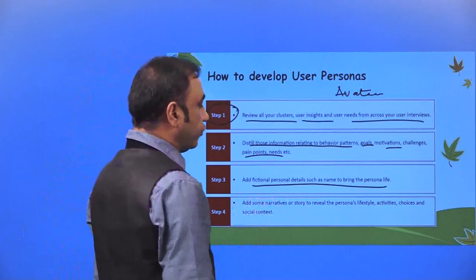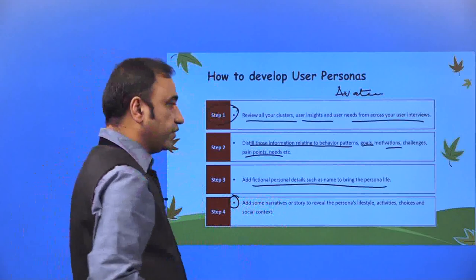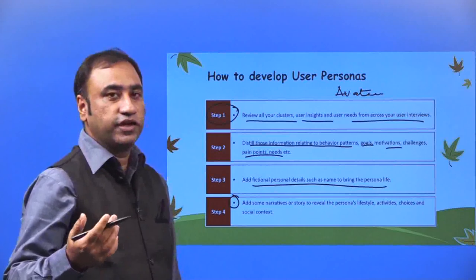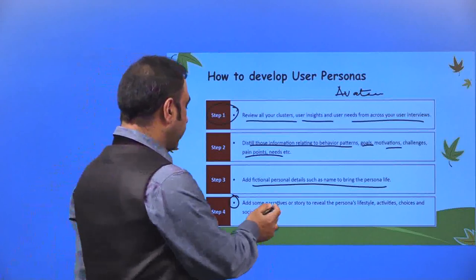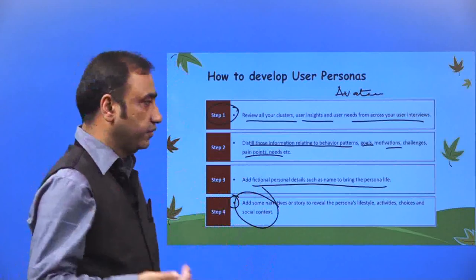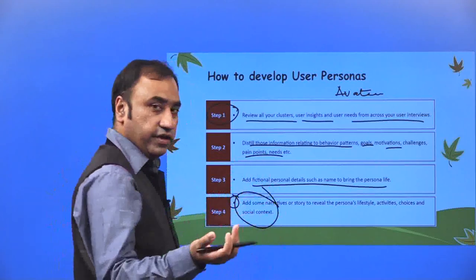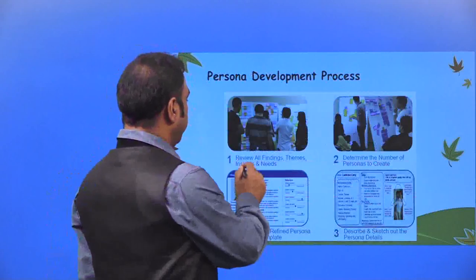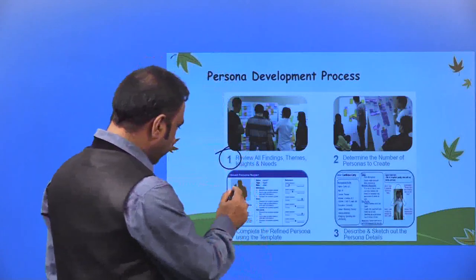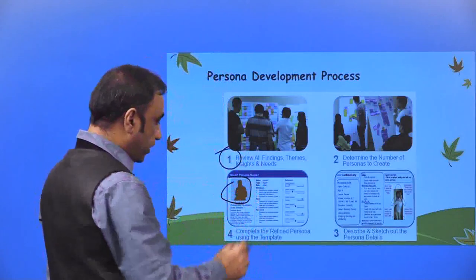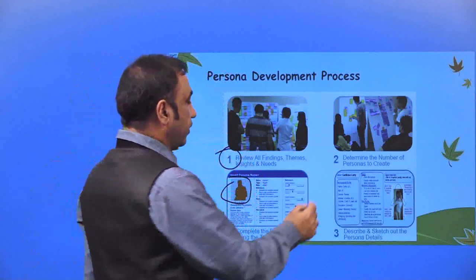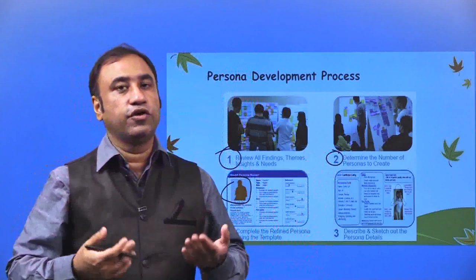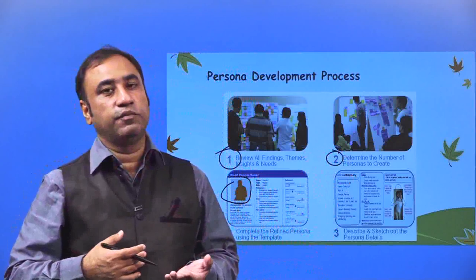Add some narratives or a story to reveal the persona's lifestyle — where does the persona spend their life? What are the activities they do? What are their likes and dislikes? What is their interest? What is their social context — what do they do, what is their religion, what foods they eat, where do they stay? Review all the findings, insights, and determine the number of personas to create. You have to finalize how many personas exist for your product or problem — whether only one persona is existing or multiple personas.